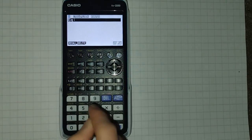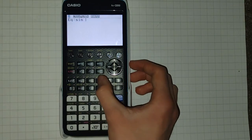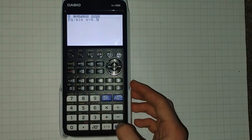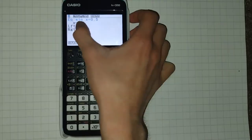We can also use F3 for solver, and this lets us enter a more general equation. For example, from earlier, sine of x equals 0.5. Clicking F5 for solve gives us a solution.